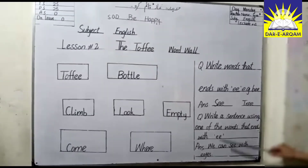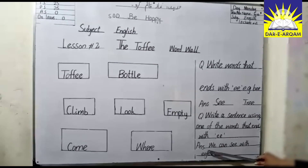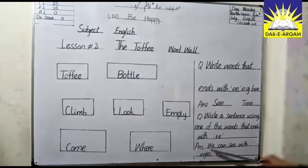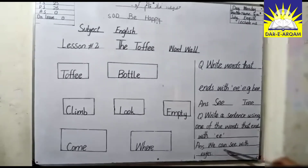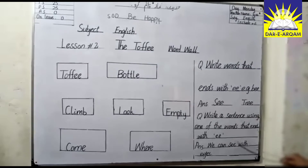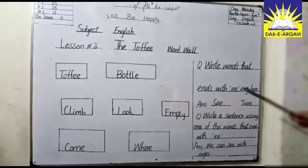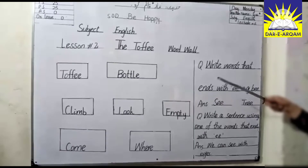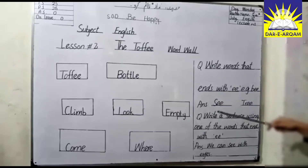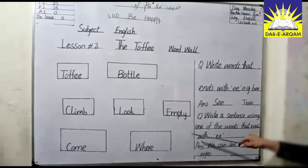We can pick this sentence: We can see with eyes. You can see the word here which ends with double E.